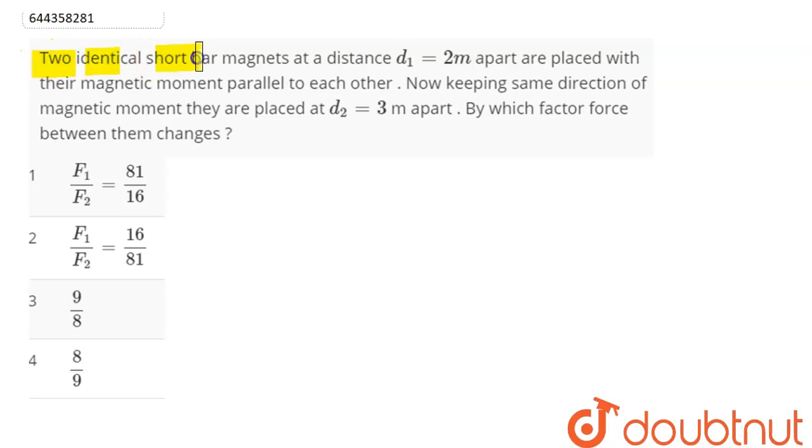The question is: two identical short bar magnets at a distance d₁ = 2 meters apart are placed with their magnetic moment parallel to each other. Now, keeping the same direction of magnetic moment, they are placed at d₂ = 3 meters apart. By which factor does the force between them change?